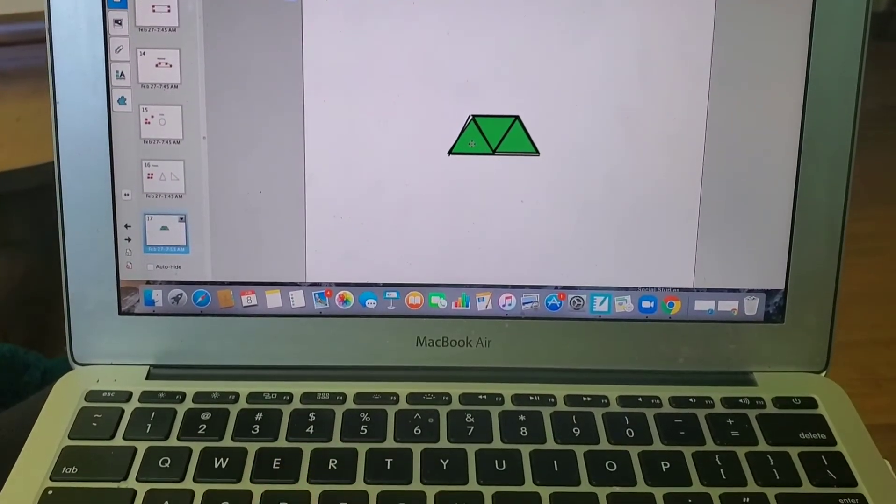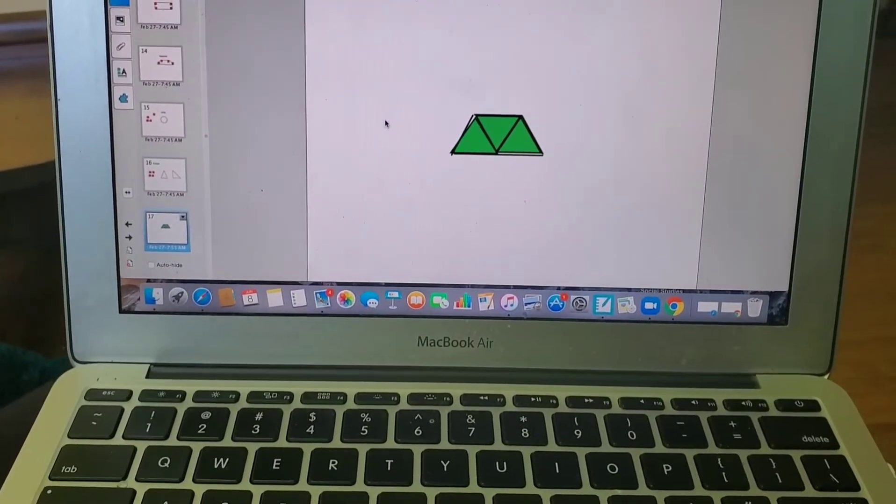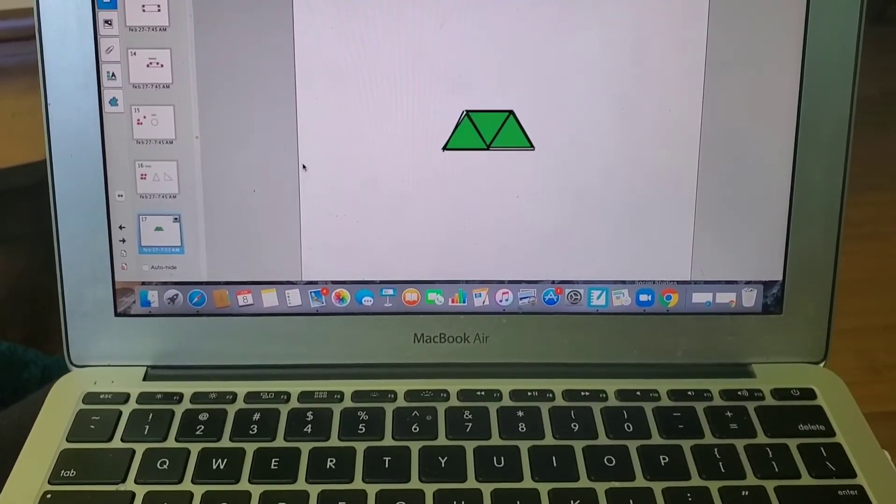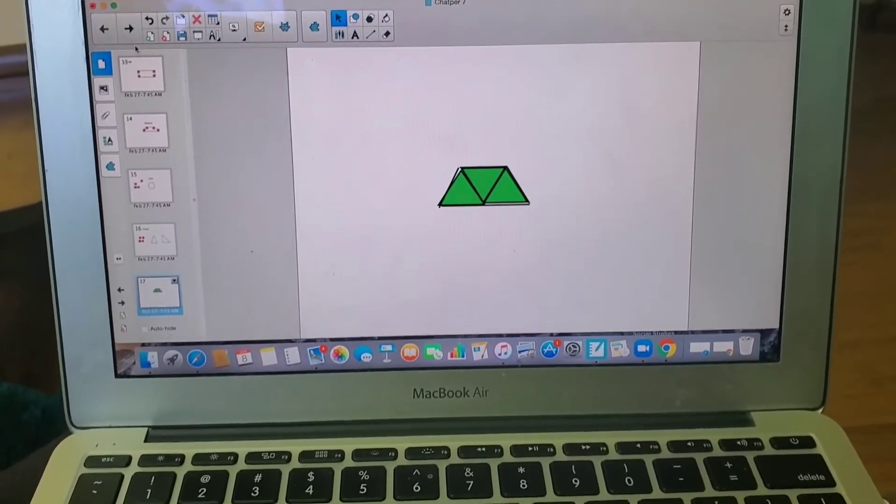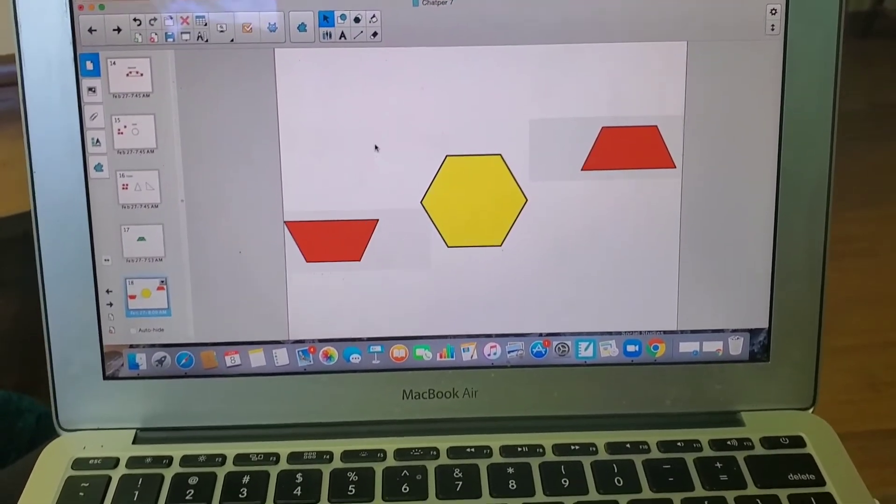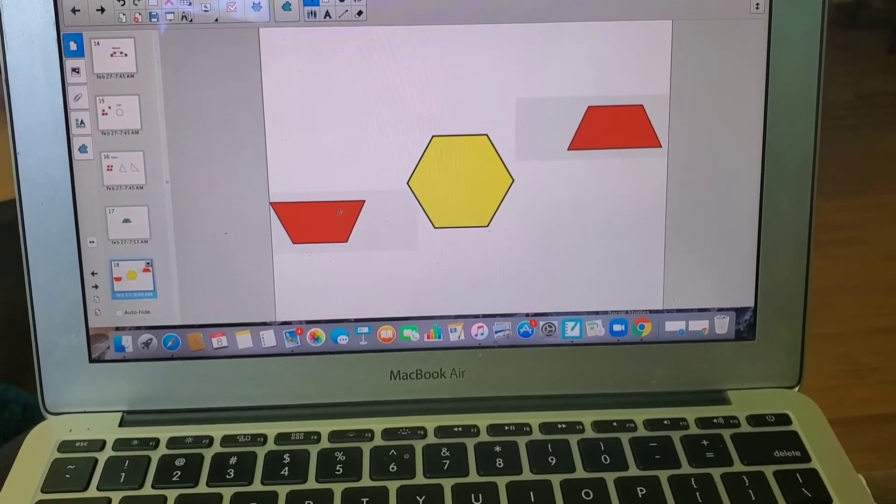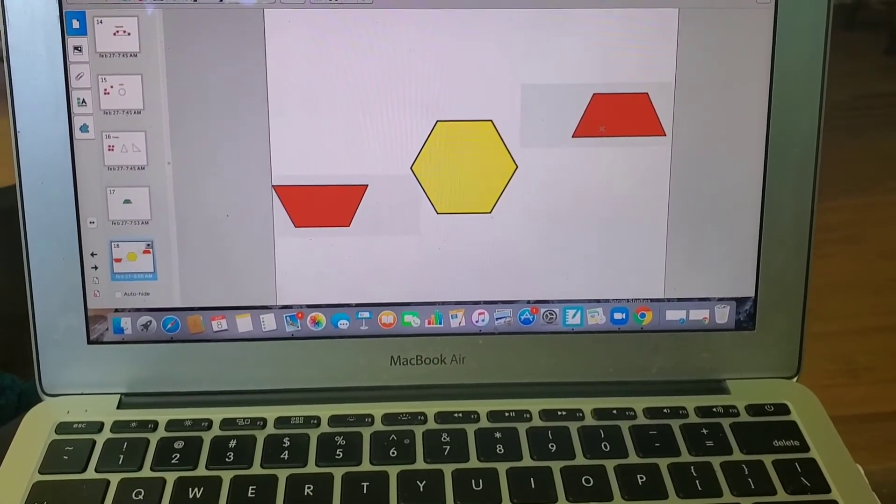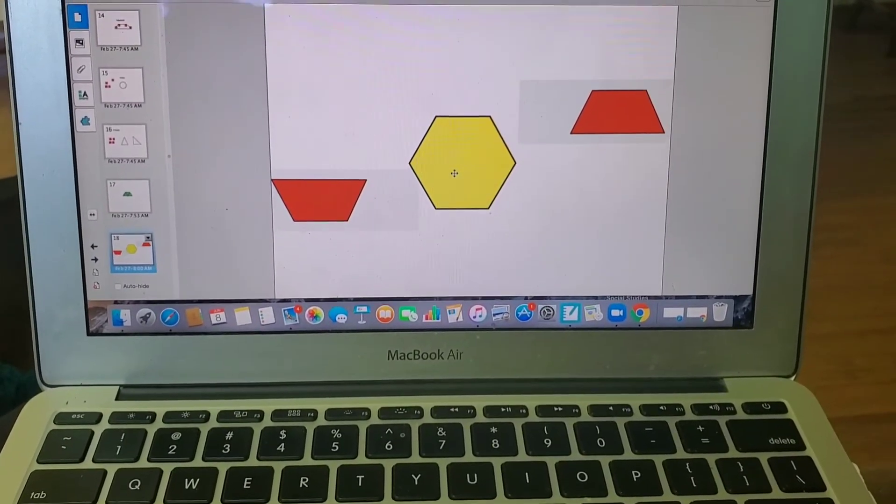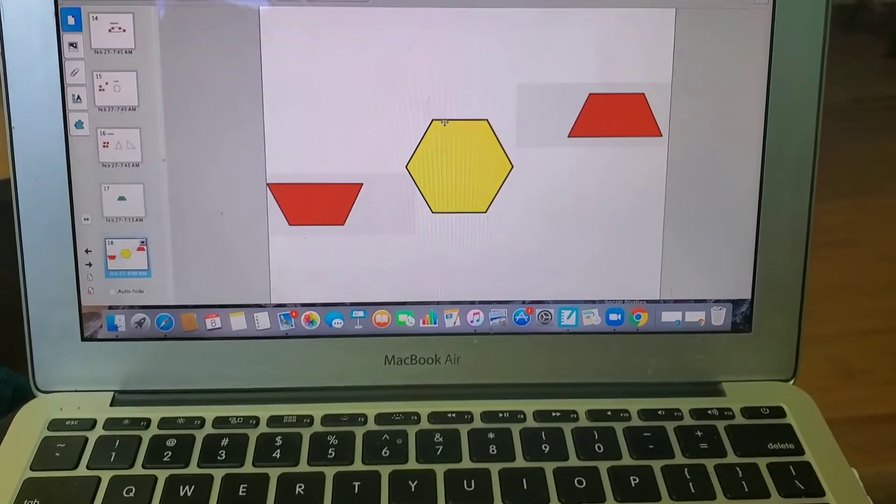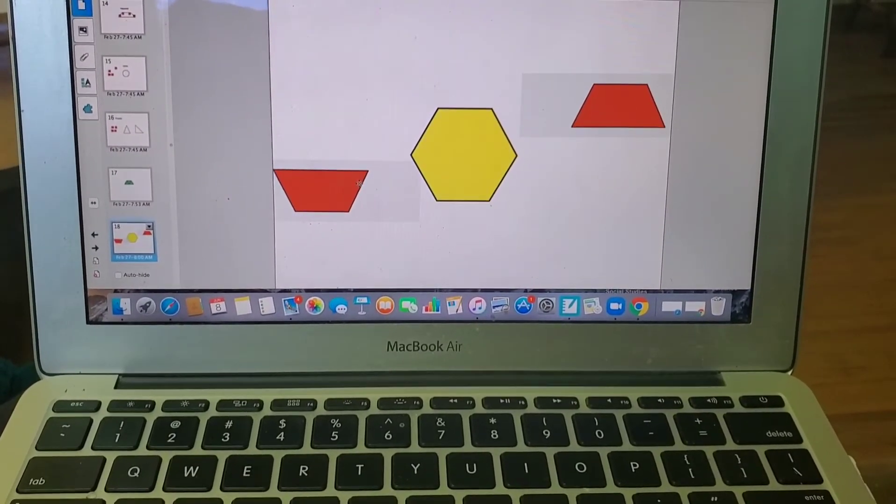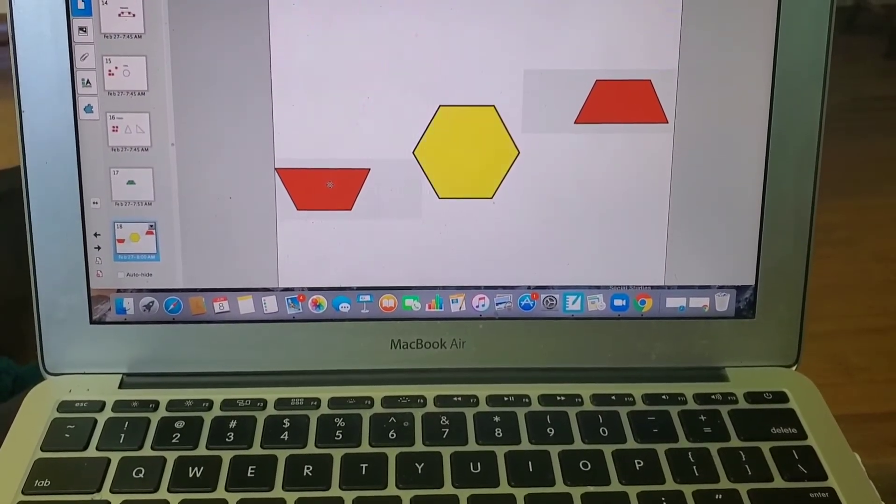Oh my gosh, isn't that so cool? See how I did that? Awesome! All right, and look, I can also use two trapezoids right here to make this shape. Do you guys know what this shape is? That's right, it's a hexagon. The hexagon has six corners and six sides. Let me show you how to do that.